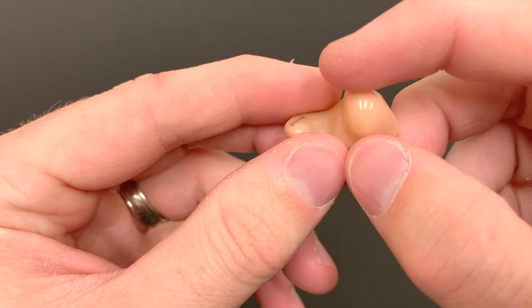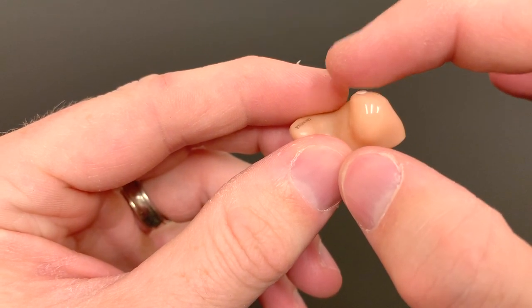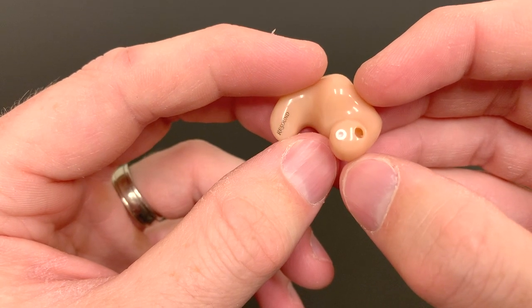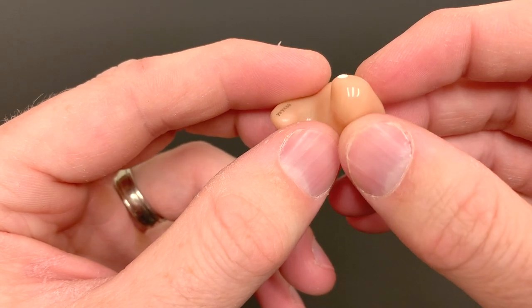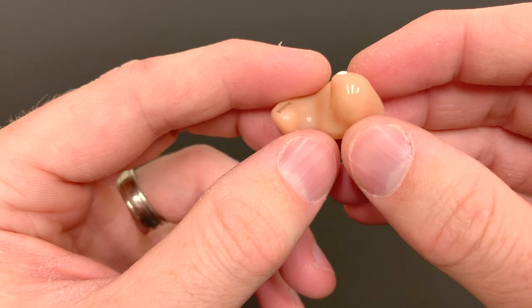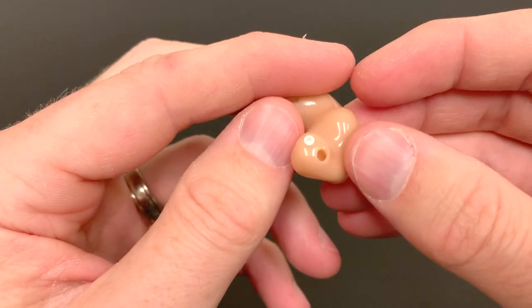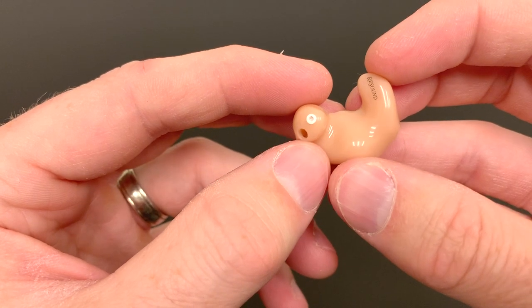On the end of some of these custom hearing aids, you may see a rubber tube extending out of it. That's called a tube extender, and that's used again to help with some of the acoustics or the way that the hearing aid fits in the person's ear. So that's the anatomy of the custom hearing aid.